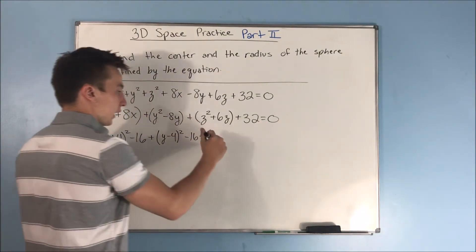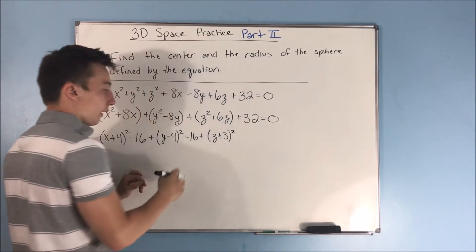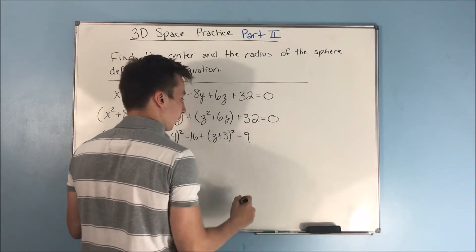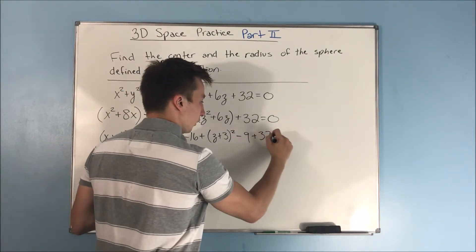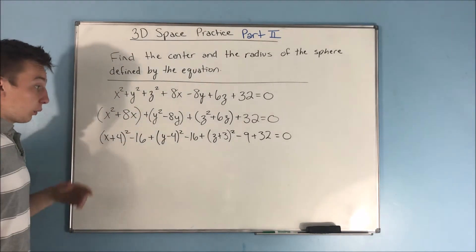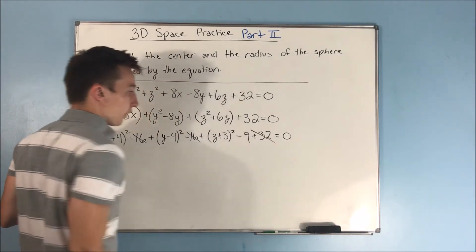Next, we have, this is going to be (z+3)². And then, this will give us a 9, and we need to subtract that off. And you add 32, and that's going to equal 0. So, you can see that we have a -16, -16, and that cancels out with the 32.